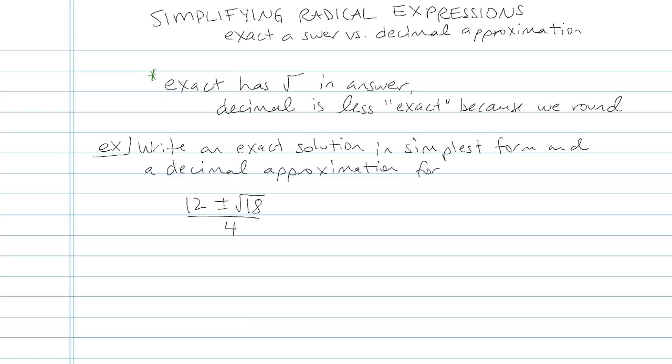Because as soon as I type that into my calculator and I write down a decimal, that's going to be a decimal approximation. It's confusing because a lot of students think a decimal is more exact than something with a radical, whereas in fact it's not.